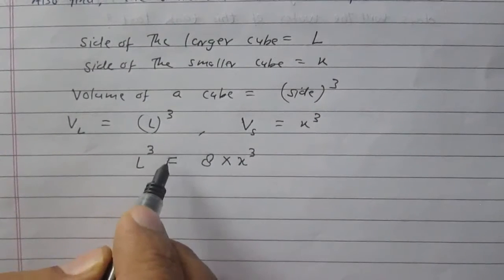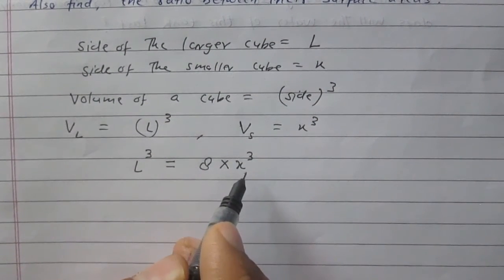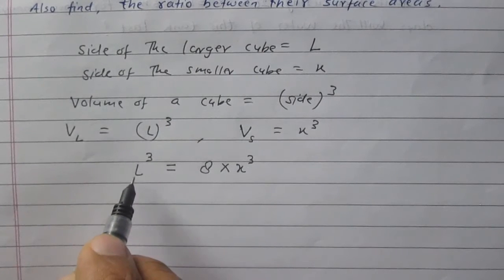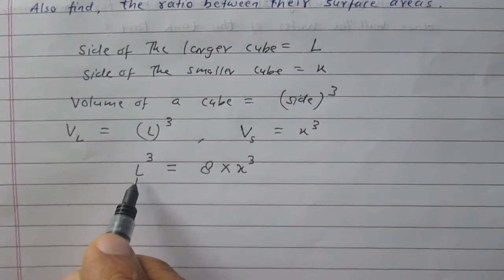L cube is equal to 8 multiplied by X cube. L, we are given the side of the larger cube.